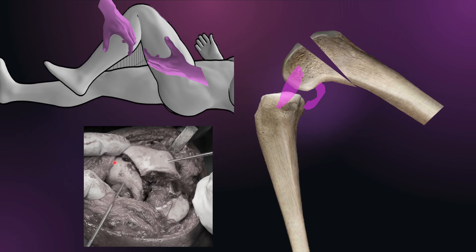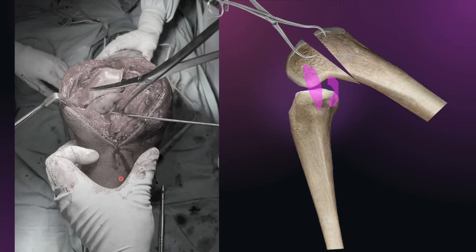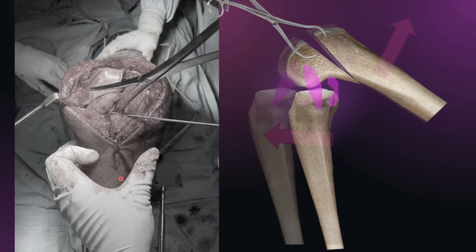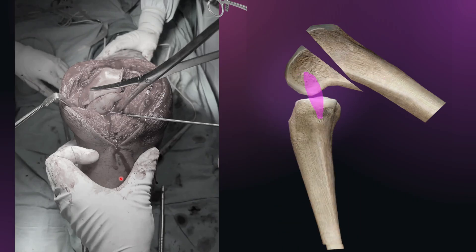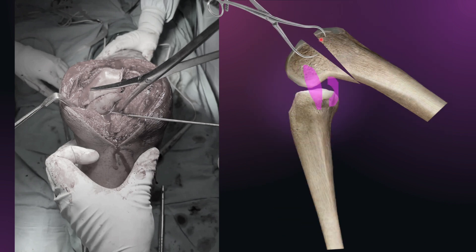Now you can titrate the reduction with the help of a joystick wire placed in the fragment, by which you can control its rotation. The moment the rotation is correct, you can put a reduction clamp to give compression at that particular point. So, simply: the assistant lifts the femur up to create clearance, and at that moment you restore the length of the Hoffa fragment using the anterior drawer maneuver. The moment they are at the same level, you pass your reduction clamp for good compression at the articular surface, and then put multiple K-wires to secure the reduction.